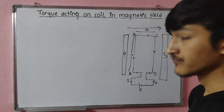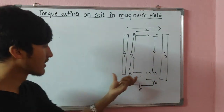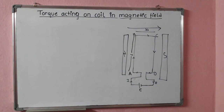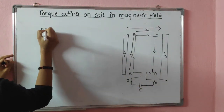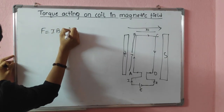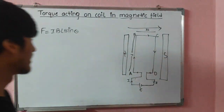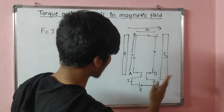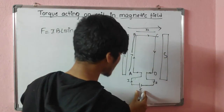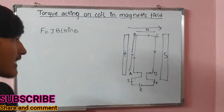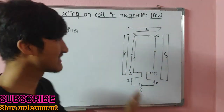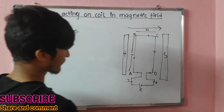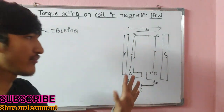Now let us talk about the derivation. We know that whenever any conductor is placed inside a magnetic field, it experiences a force given as F = IBL sinθ, where θ is the angle between the conductor and the magnetic field, L is the length of the conductor, B is the magnetic field, and I is the amount of current flowing in it. In our configuration, this rectangular coil ABCD is connected to a battery so that current can flow through it.